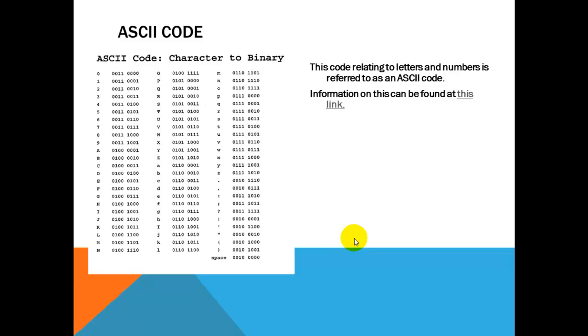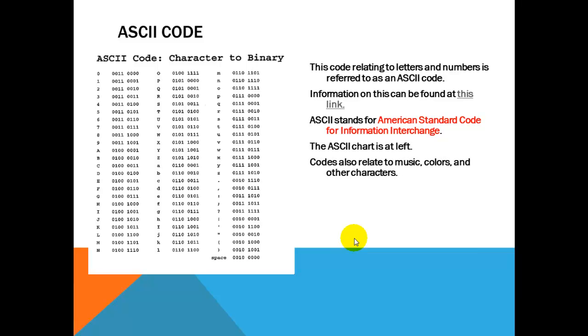Now, in case this link does not work, I will have a backup link in a folder in ANGEL that talks about binary code. ASCII stands for American Standard Code for Information Interchange. And that's what we're talking about, the chart at the left. There are also other codes, as I mentioned before, that will relate to music, colors, and other characters. So if you remember way back when we did the first video over binary code, that one byte, eight locations, or eight bits, could include all numbers from 0 to 256. And these would also relate then to music, colors, and other characters.